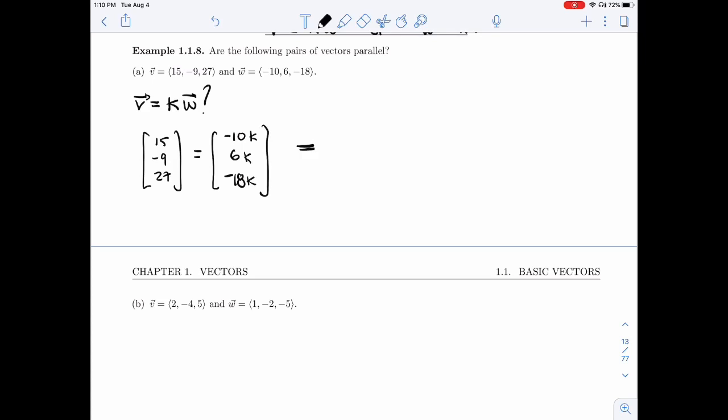And so I'll need that 15 is minus 10K, minus 9 is 6K, 27 is minus 18K.